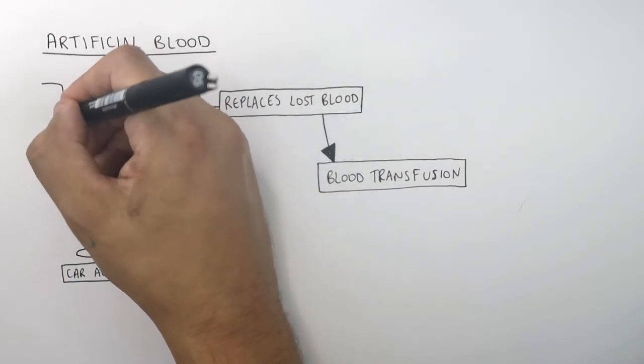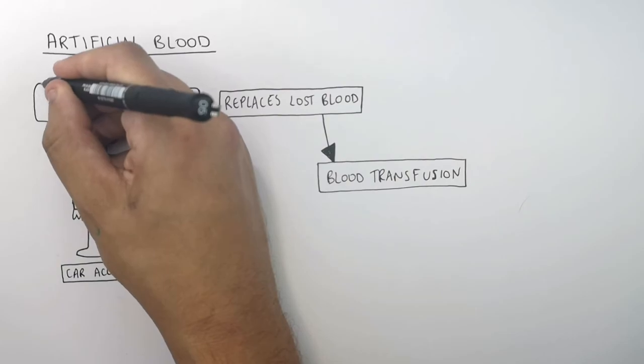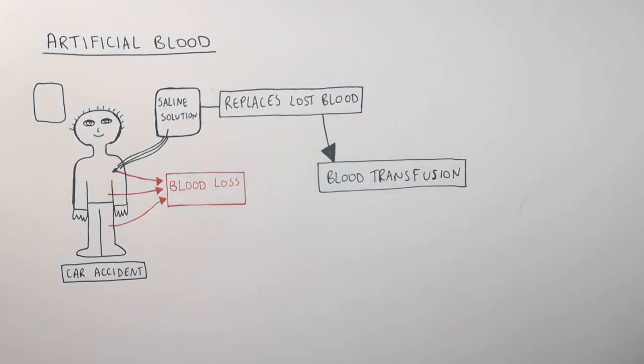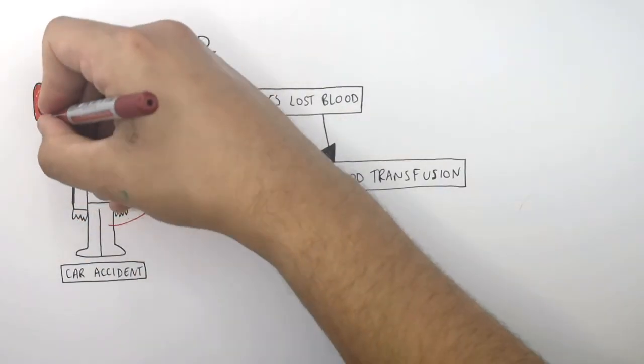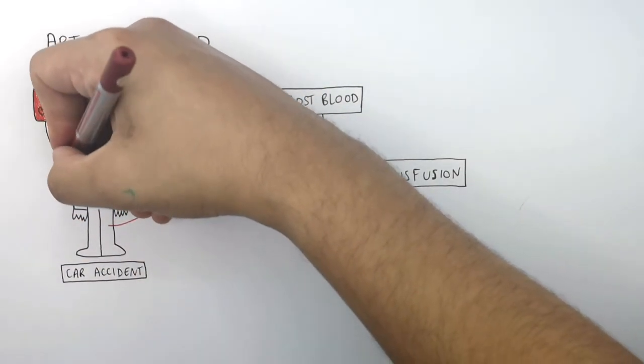It's possible to survive with one third of your red blood cells in your body at one time. But of course they're going to need a blood transfusion when they get to the hospital to replace the red blood cells they lost in the car accident.